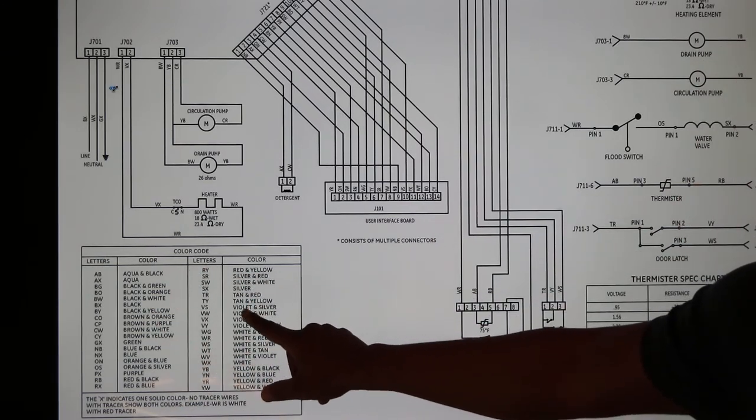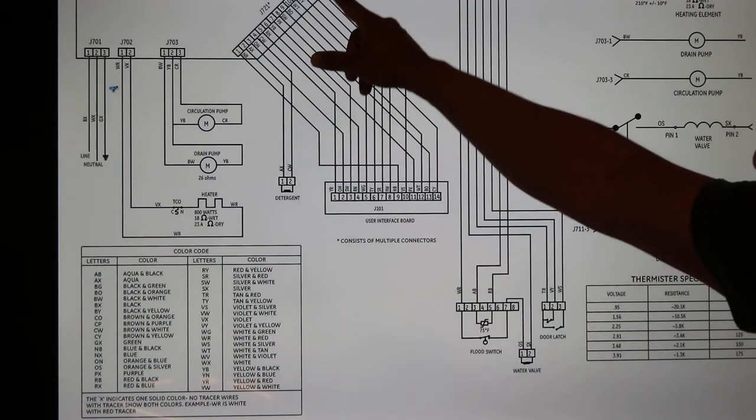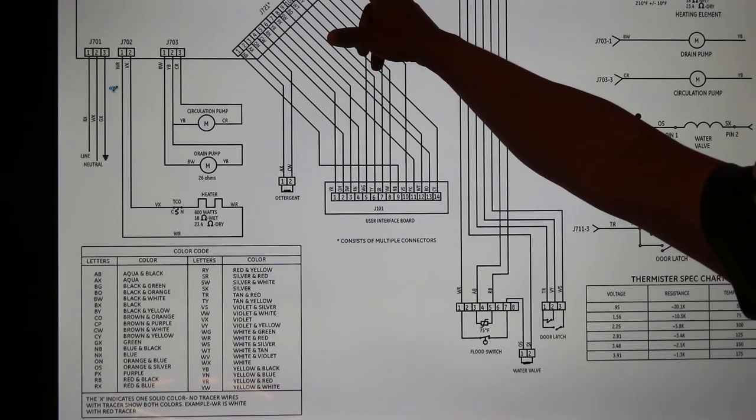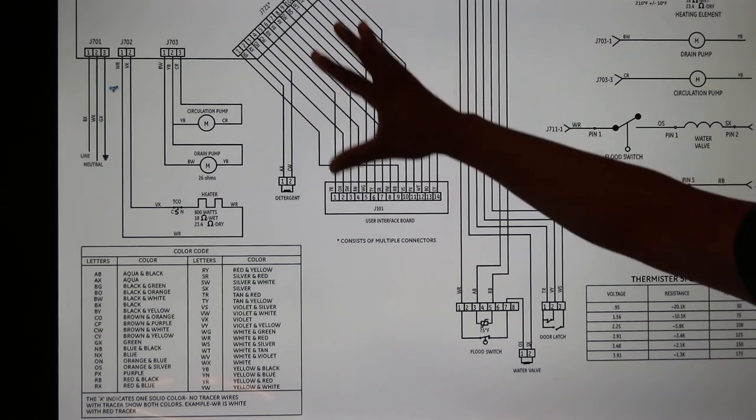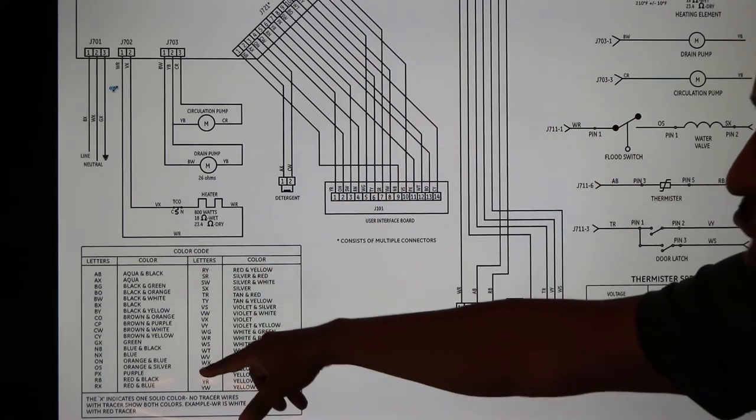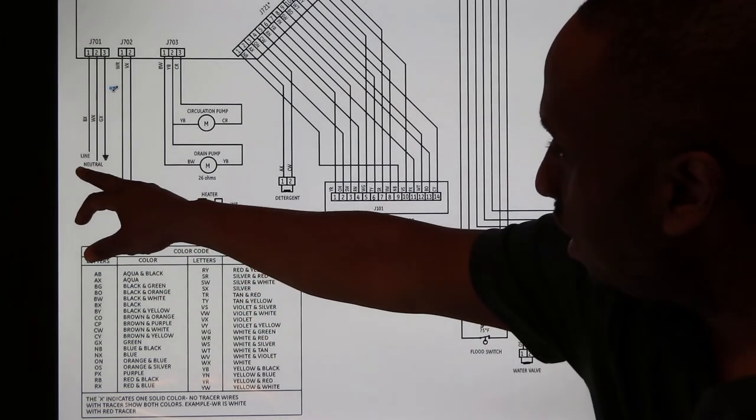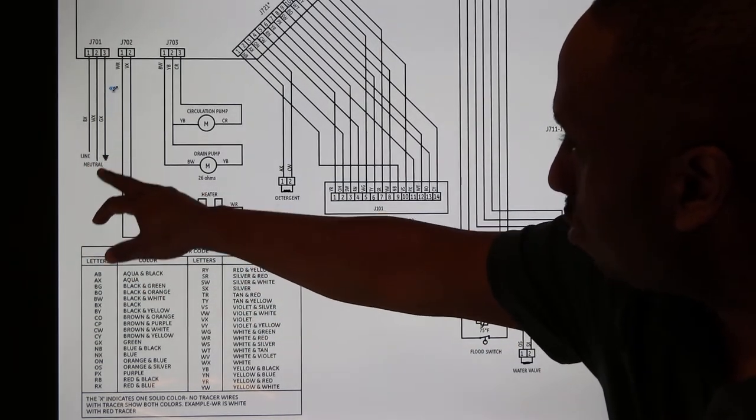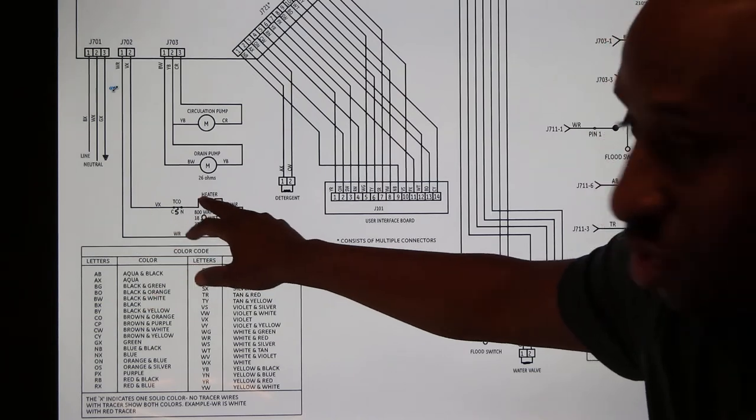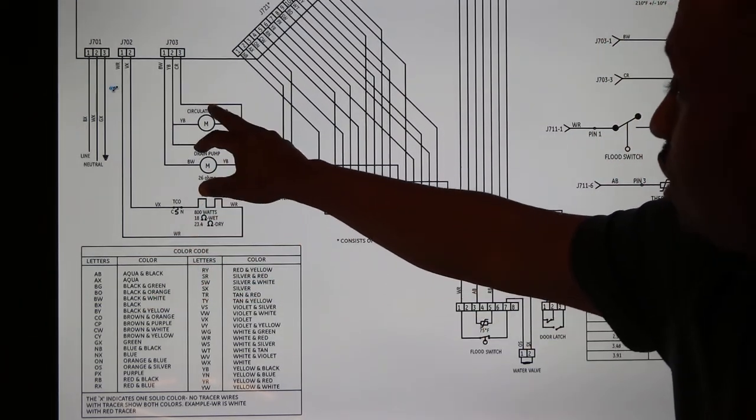Over here you're gonna have your color codes - this tells you what color of the wires that are going through your system. Then over here you have your line, neutral, and ground for power, and here we have our heater, drain pump, and circulation pump.